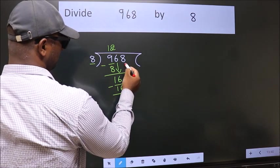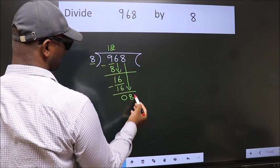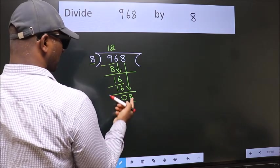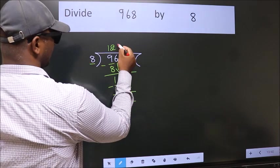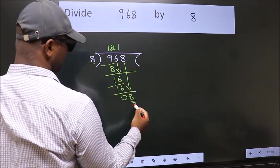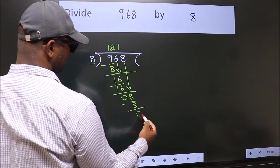After this, bring down the beside number. So 8 down. So 8. When do we get 8 in the 8 table? 8 ones, 8. Now we subtract. We get 0.